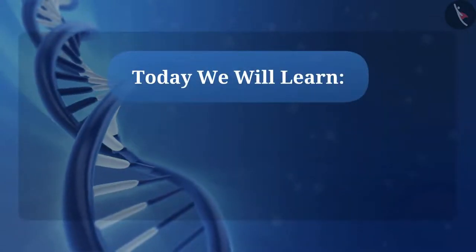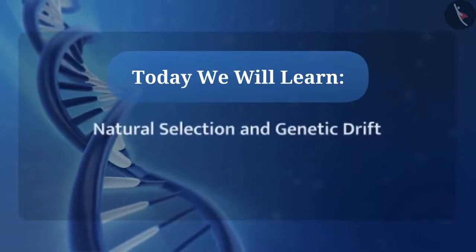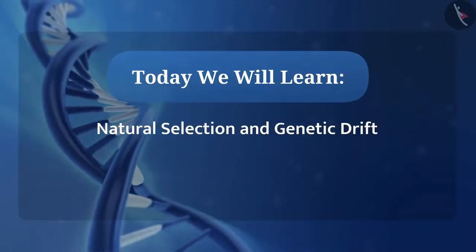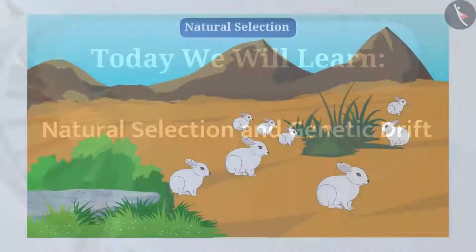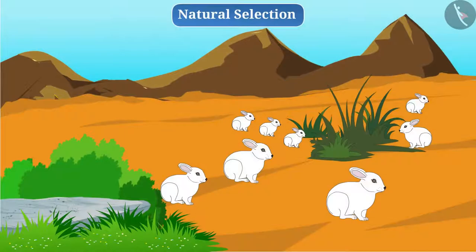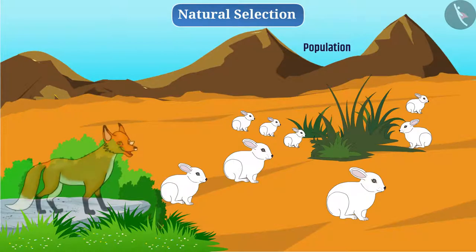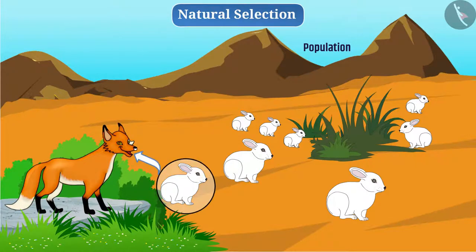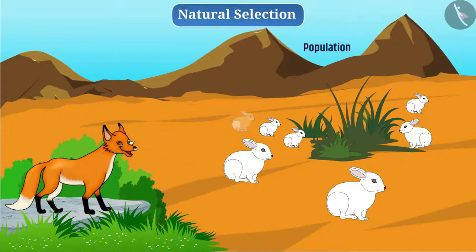Today we will learn about Natural Selection and Genetic Drift. There is a population of white rabbits residing on a hill. Sometime after, a fox comes to live on the hill. The fox hunts these rabbits for its survival. Gradually, the number of rabbits on the hill decreases.